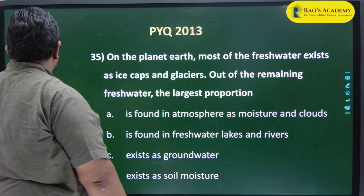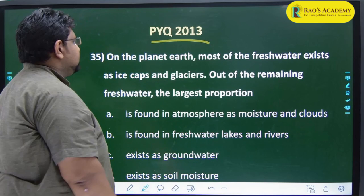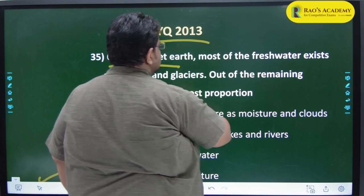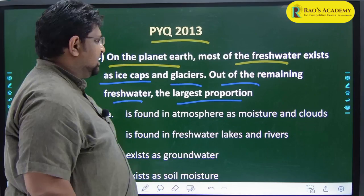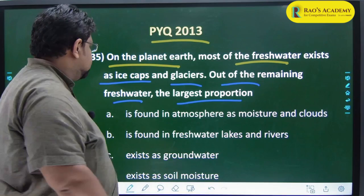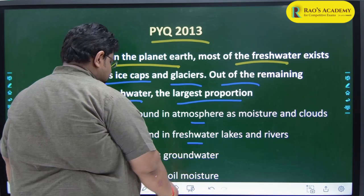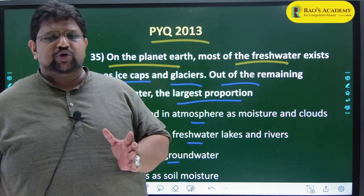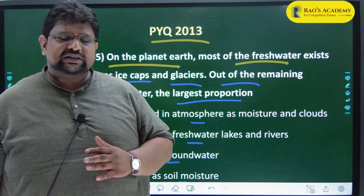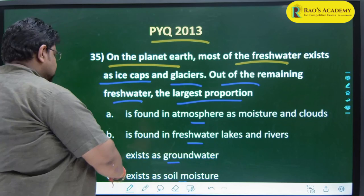The next question from 2013 prelims: 'On the planet earth, most of the fresh water exists as ice caps and glaciers. Out of the remaining fresh water, the largest portion is found as...' The options were: moisture in atmosphere, fresh water lakes and rivers, groundwater, or soil moisture. The first highest water is in oceans, after oceans it is ice caps and glaciers, and after glaciers it is groundwater which is highest. The option is C.